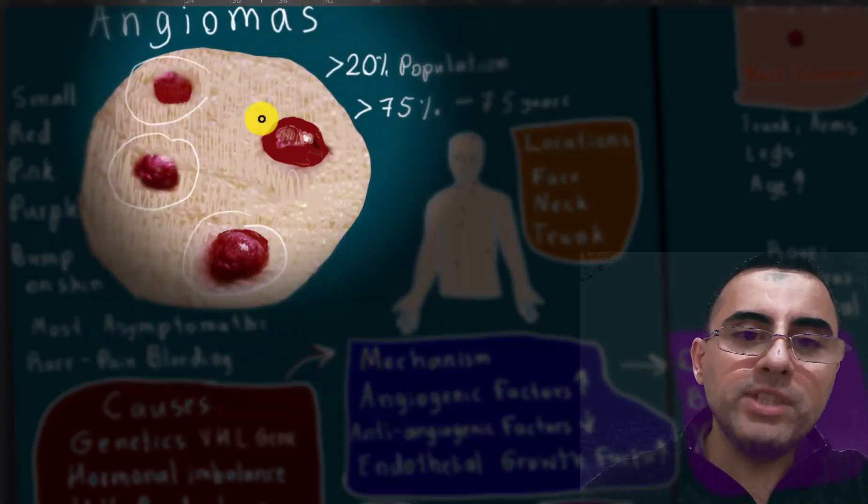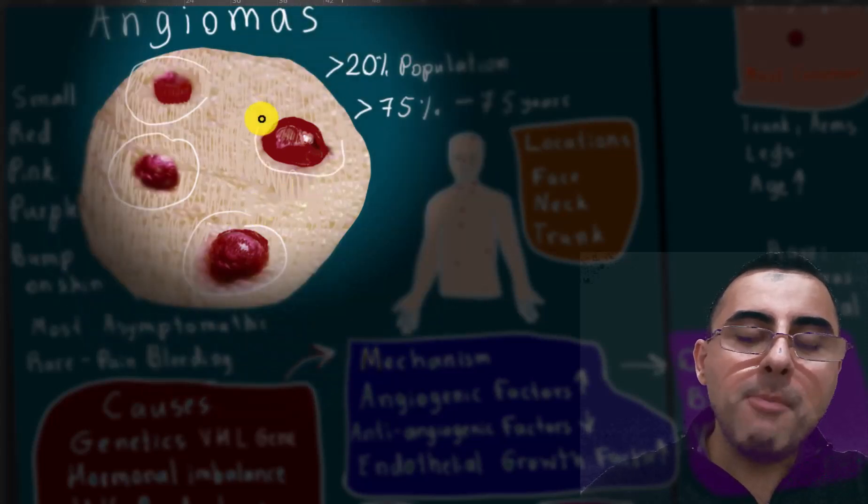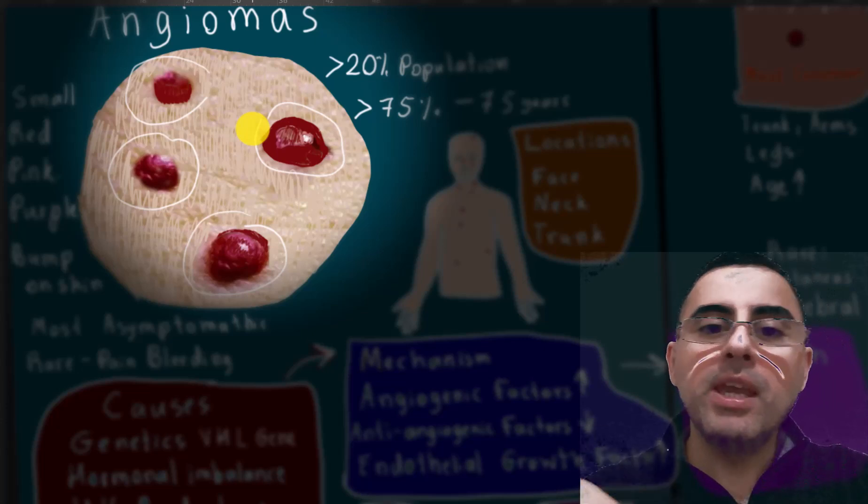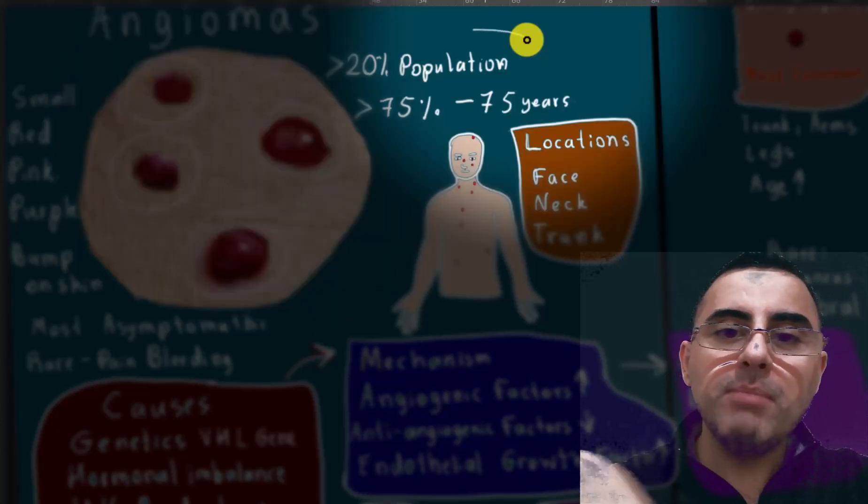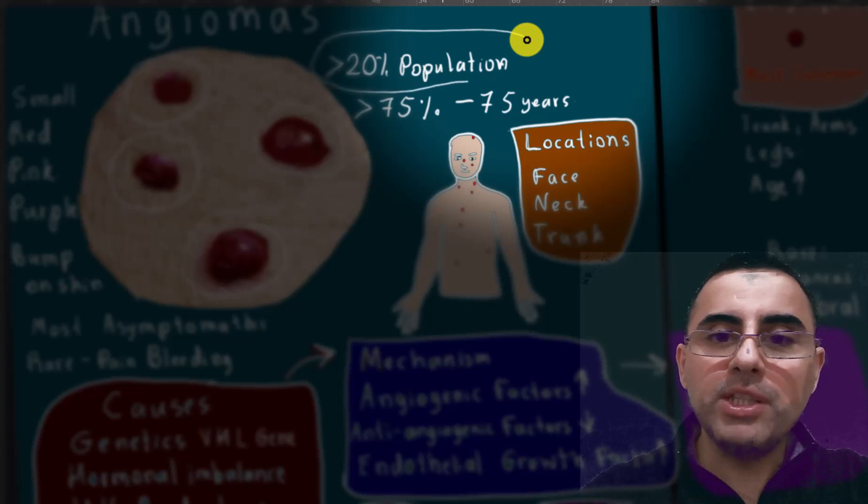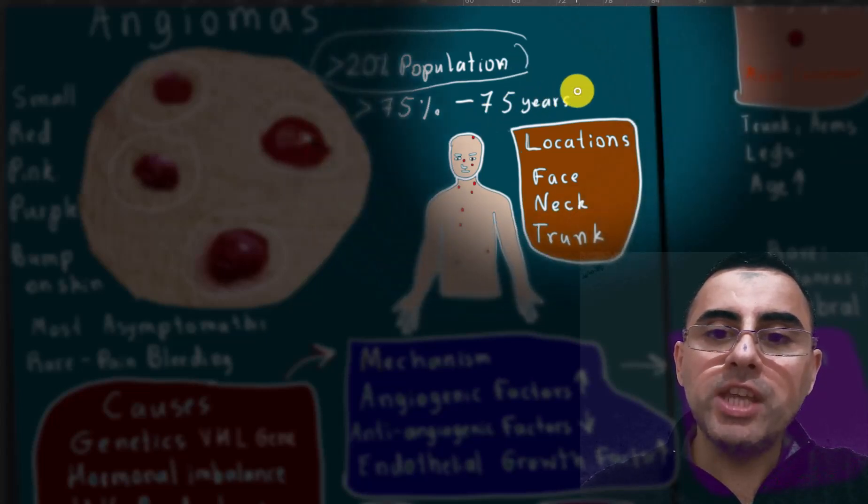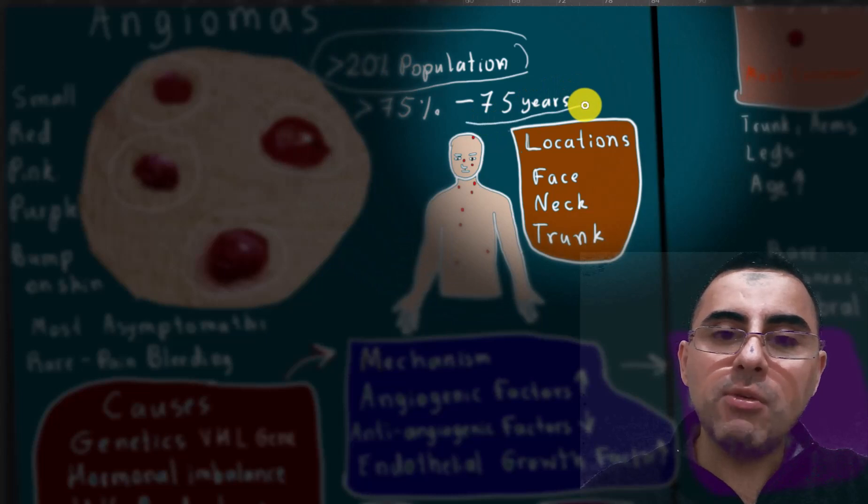They usually are eroded and have a bump appearance, but sometimes they can be flat. They affect more than 20% of the general population, meaning angiomas are a pretty common disease, and they affect 75% of the population aged 75 years or more.